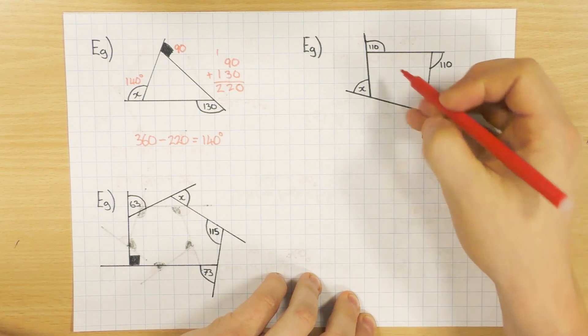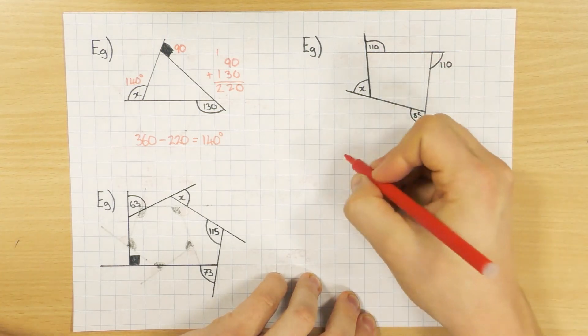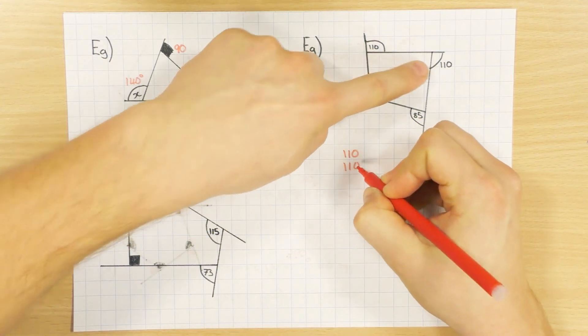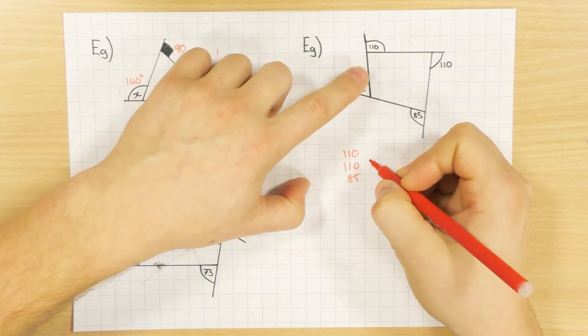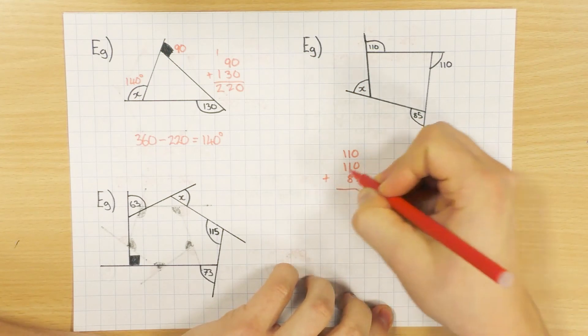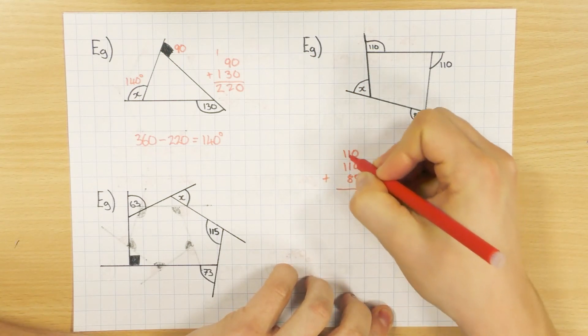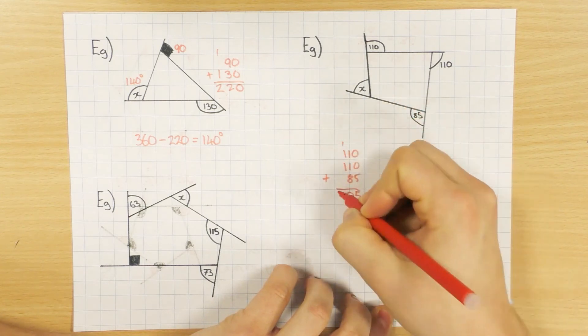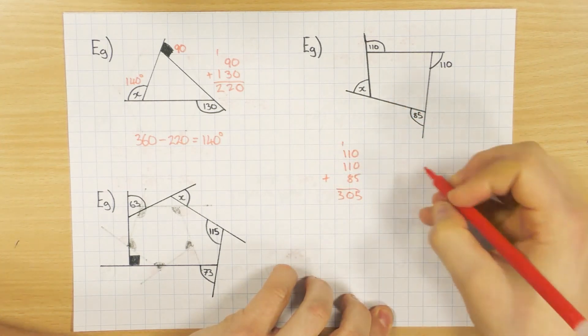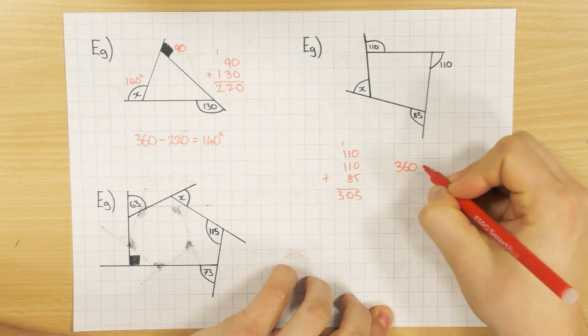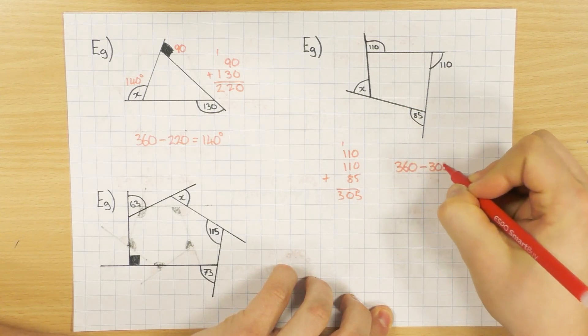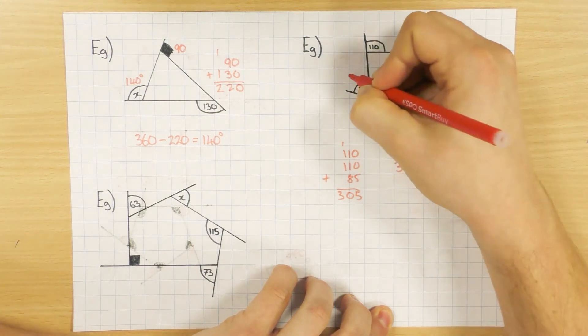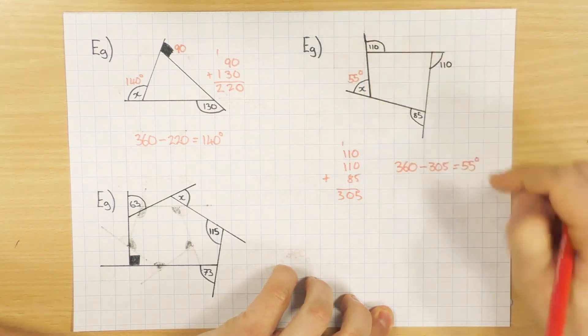Same thing here. I'm going to add up the ones that I've got. So I've got 110 plus another 110 plus 85. And obviously, I want to work this one out here. So let's add that up. That's 305. And because I know they all add up to 360, 360 take away 305 will give me 55 degrees. So then X will be 55 degrees.